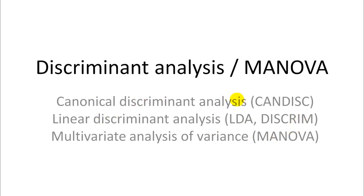Canonical discriminant analysis is more of an ordination application; linear discriminant analysis is for grouping; and multivariate analysis of variance is for significance testing. But essentially the underlying math for all of those is exactly the same. You're just looking at different aspects of the analysis with slightly different questions and objectives. They are all based on the same rotation — a rotation-based technique like principal component analysis and factor analysis covered earlier.